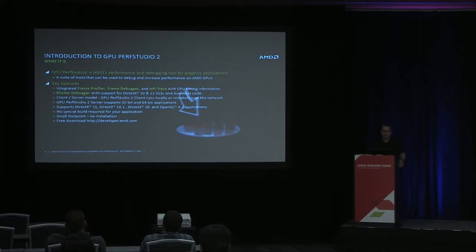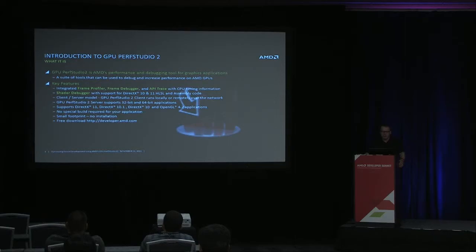So what is it? It's a suite of tools that can be used to debug and optimize graphics applications for AMD hardware. It consists of a frame profiler, a frame debugger, an API trace, and a shader debugger. It's a client-server model, so you can run the client and server on one machine for development mode. And if you want really accurate profiling, you can run your application on a server and attach to it over a network from a client.